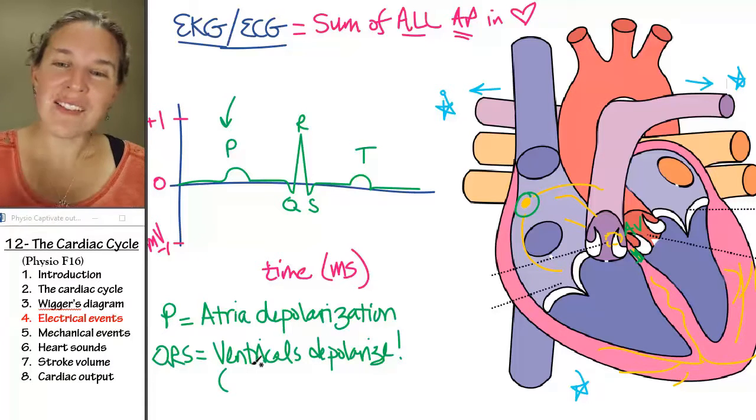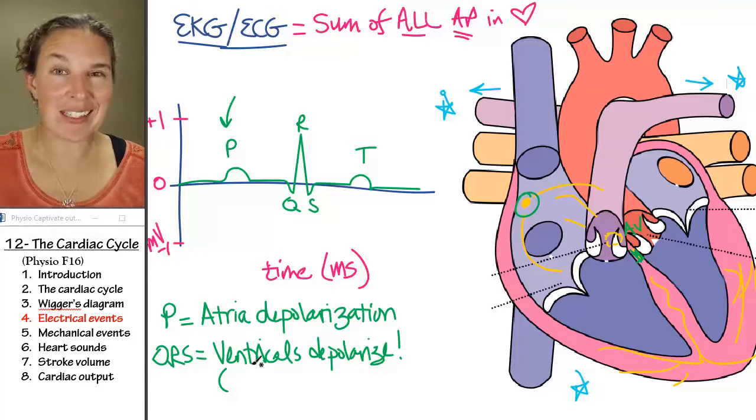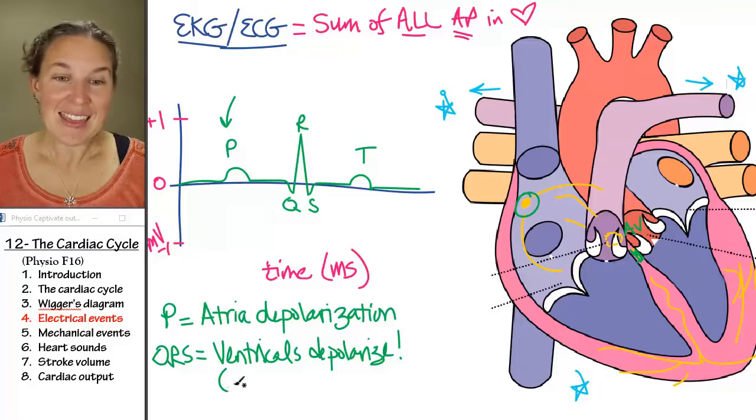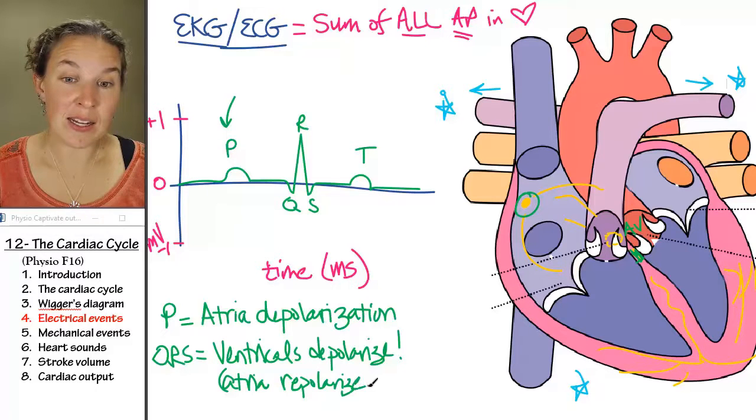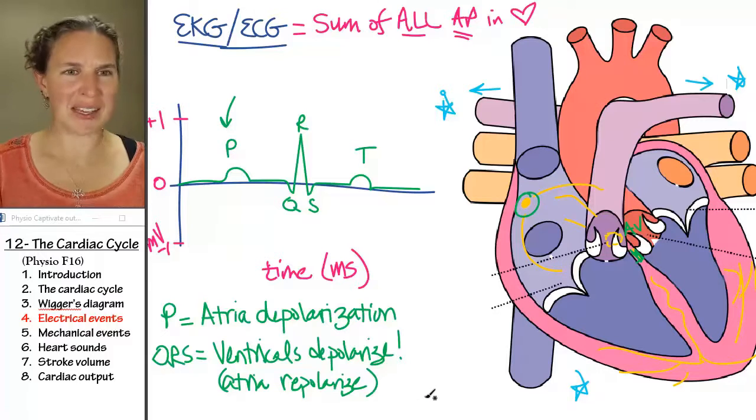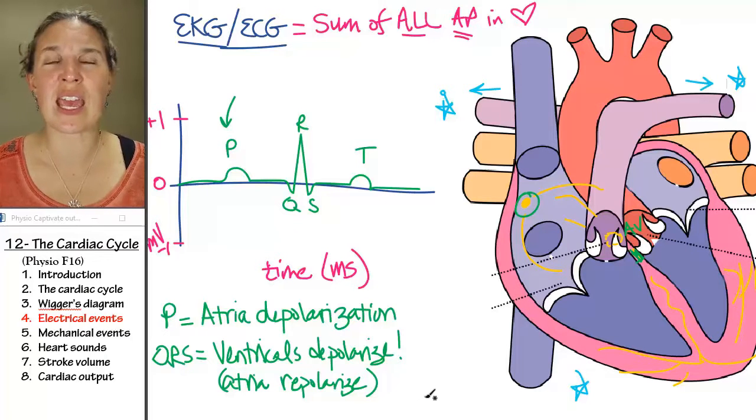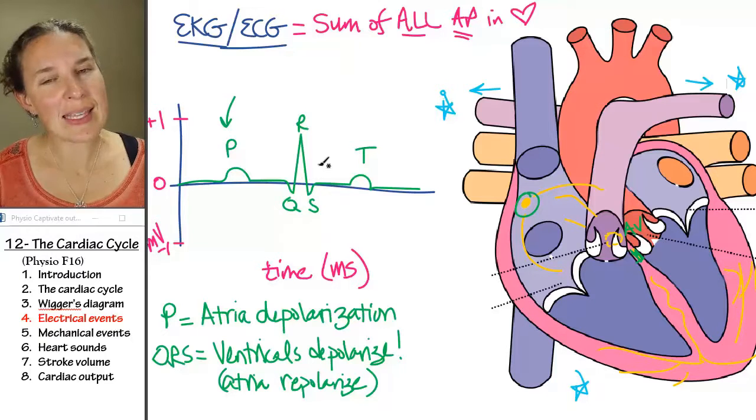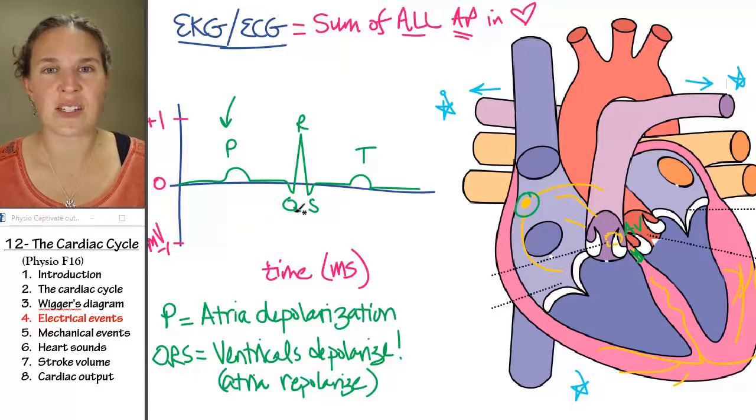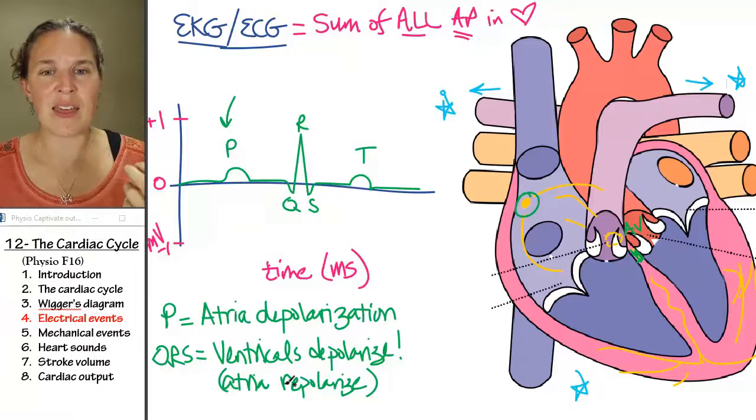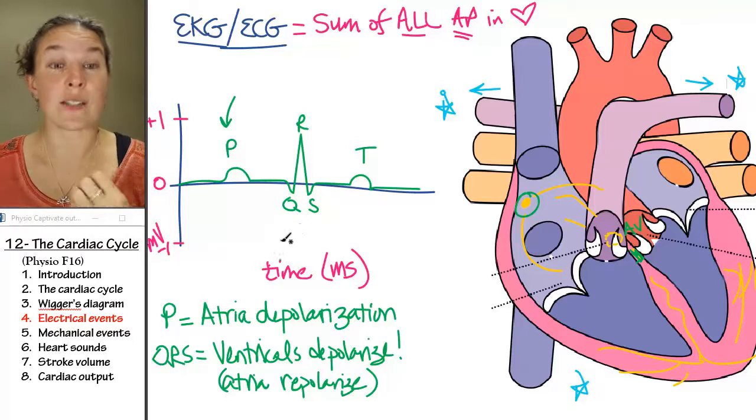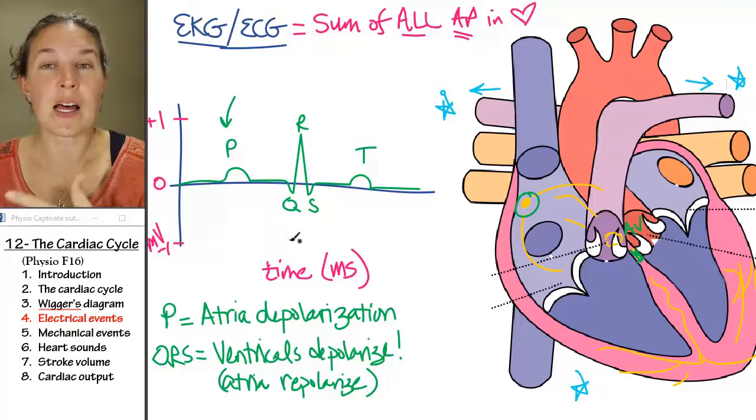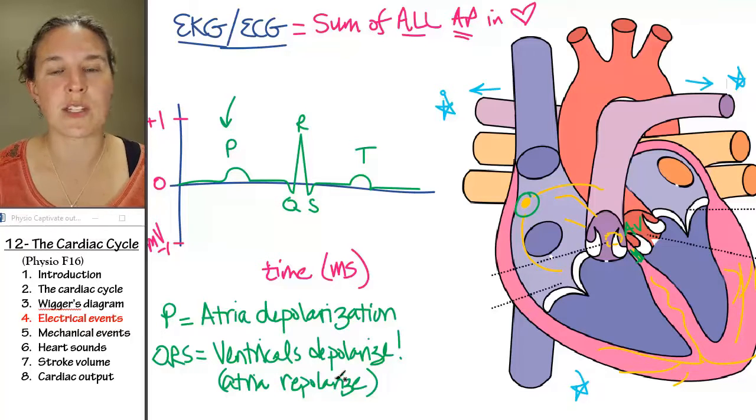Interestingly, while the ventricles are depolarizing, what do you think is happening to the atria? The atria are actually repolarizing. Is that an electrical event? Totally. That's totally an electrical thing as well. It gets lost. The ventricle depolarization, the ventricles are so big that the atrial repolarization is somewhere in there. It doesn't get to hold its own lump because the depolarization is so big.